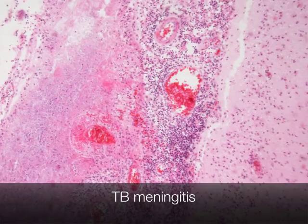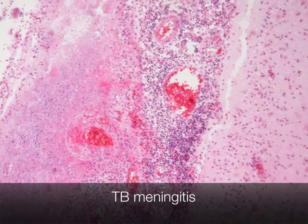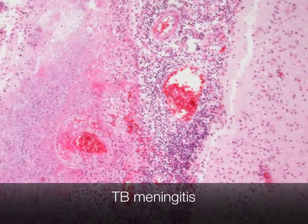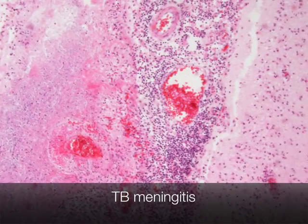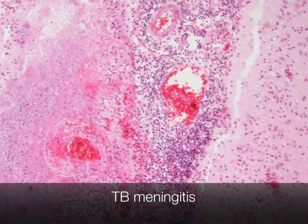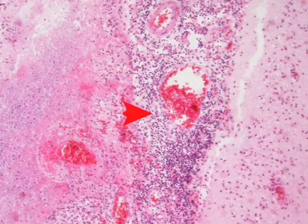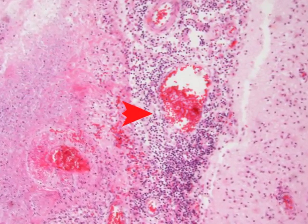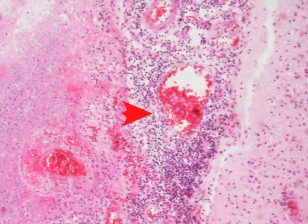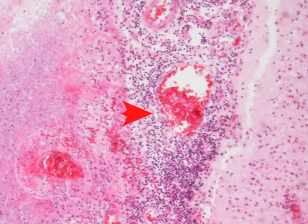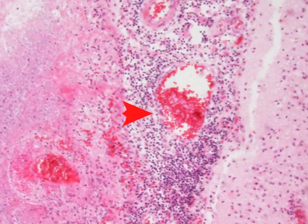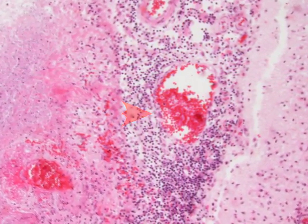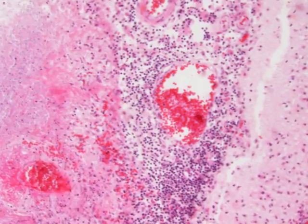This is a section of brain from a patient who died from TB meningitis. As we zoom into the subarachnoid space between the pia and arachnoid mater, you can see that in the CSF the main cell type in the inflammatory exudate is mononuclear cells, predominantly lymphocytes.